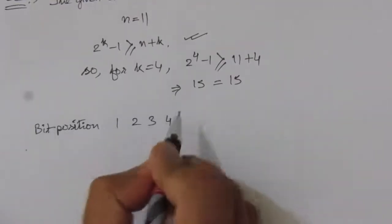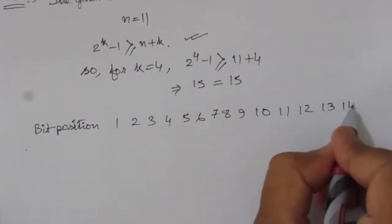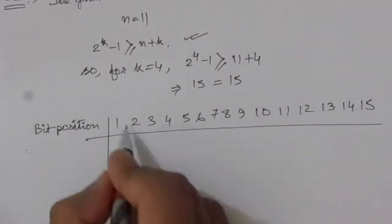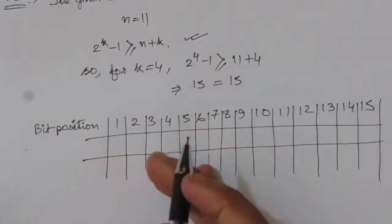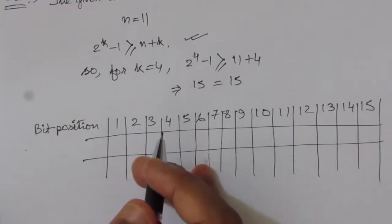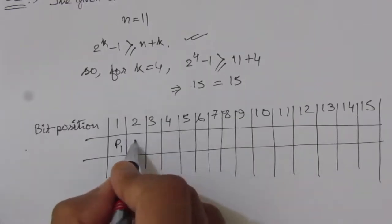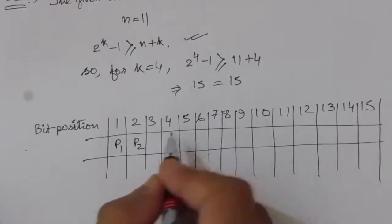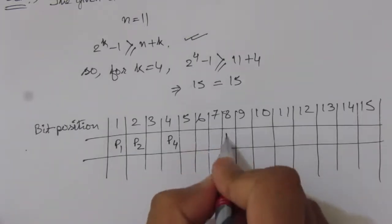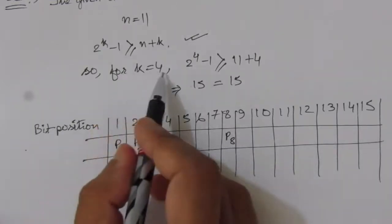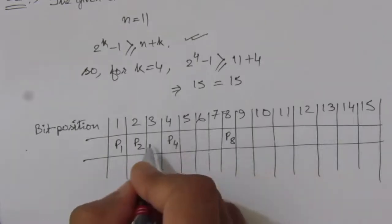The bit positions will be 1 through 15. We need four parity bits, and their positions should be powers of 2. So 2^0=1 gives parity bit P1 at position 1, 2^1=2 gives P2 at position 2, 2^2=4 gives P4 at position 4, and 2^3=8 gives P8 at position 8. All remaining positions are data bit positions.